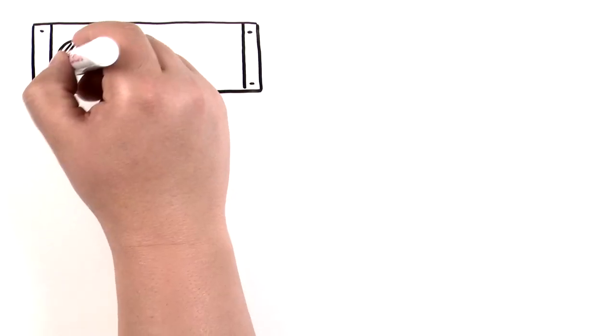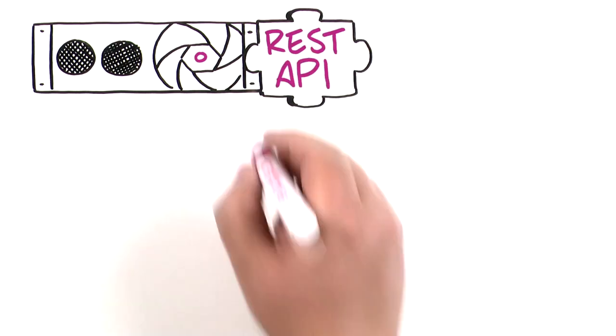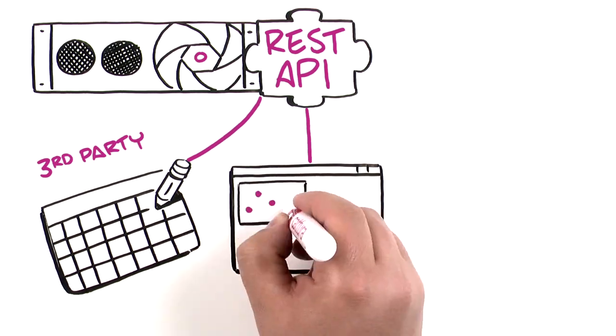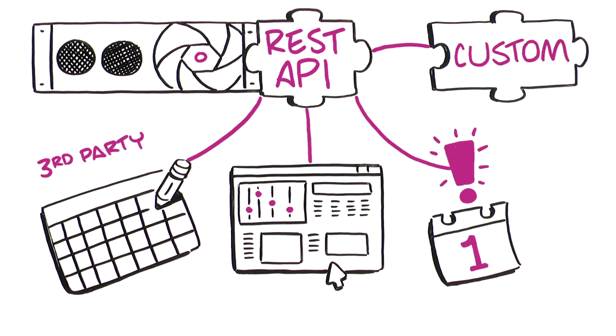Easily extend CaptureCast to meet your unique integration needs with our REST API. Integrate third-party scheduling services, create one-touch room control interfaces, develop custom event notifications, and other custom integrations.